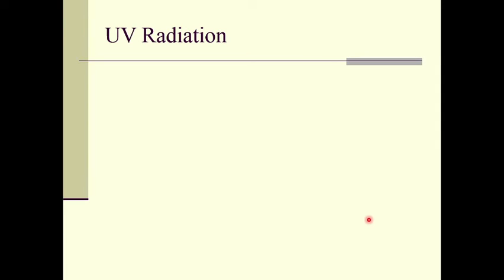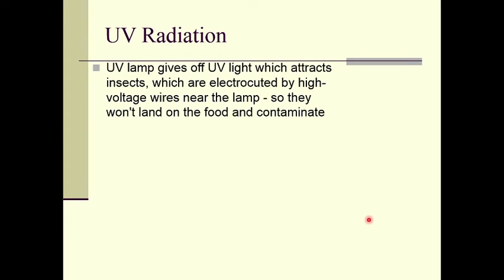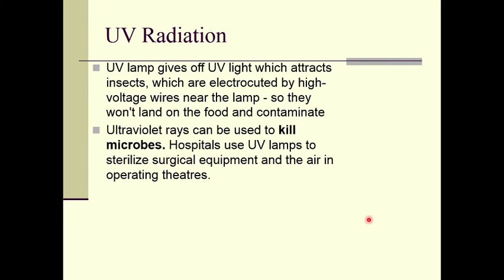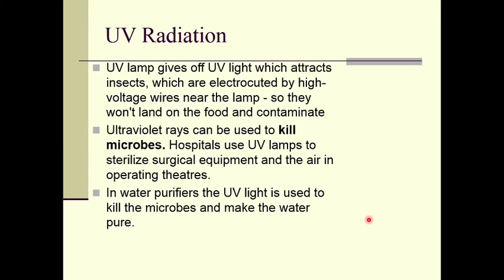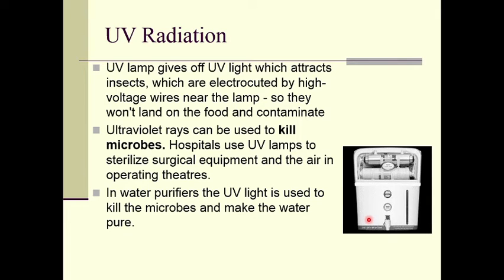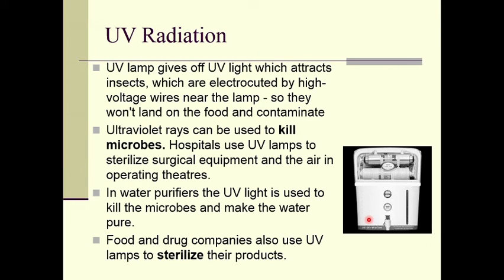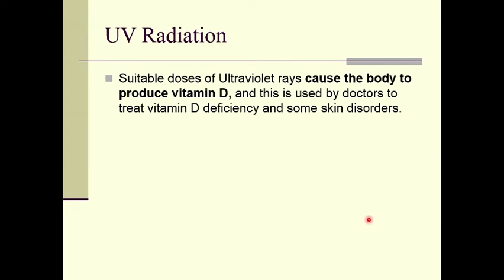Let us move to UV radiation. UV lamps give off UV light which attracts insects that are then electrocuted by high voltage wires near the lamp, preventing them from contaminating food. Ultraviolet rays can be used to kill microbes — hospitals use UV lamps to sterilize surgical equipment and air in operation theaters. In water purifiers, UV light kills microbes and purifies water. Food and drug companies also use UV lamps to sterilize their products. Suitable doses of ultraviolet rays cause the body to produce vitamin D, used by doctors to treat vitamin D deficiency and some skin disorders.